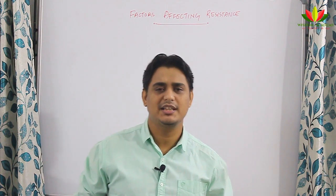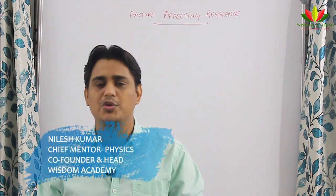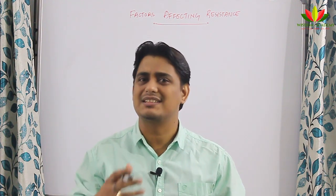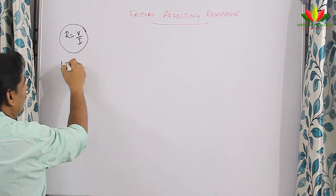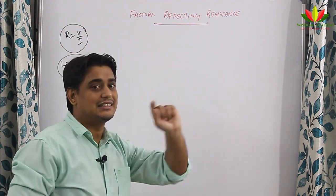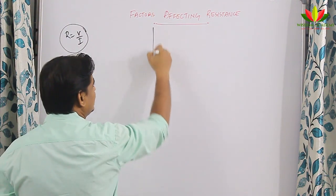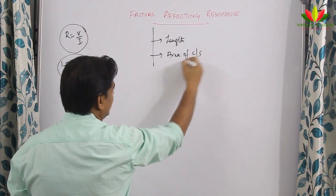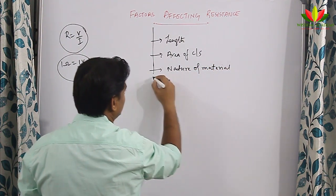Welcome back to Wisdom Academy YouTube page. In the previous video we were learning the current electricity chapter where I talked about Ohm's law. After learning about Ohm's law you understood that resistance is the opposition to the flow of current, and the device which provides resistance is called a resistor. Mathematically, resistance R equals V by I, and 1 ohm equals 1 volt per 1 ampere. Today we are going to see on what factors the resistance depends. Resistance is a property which depends upon various factors: the length of the conductor, the area of cross-section, the nature of material, and the physical conditions.